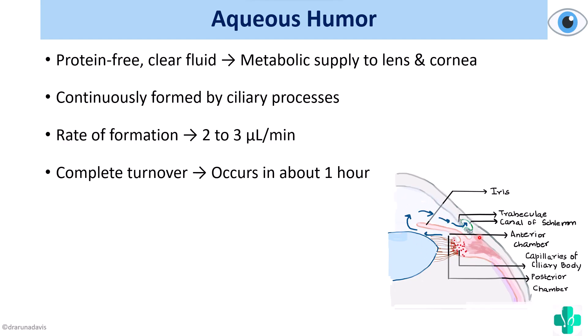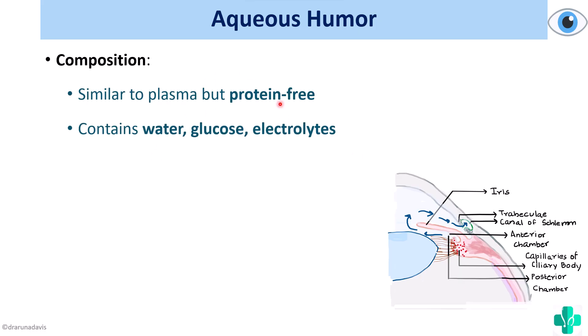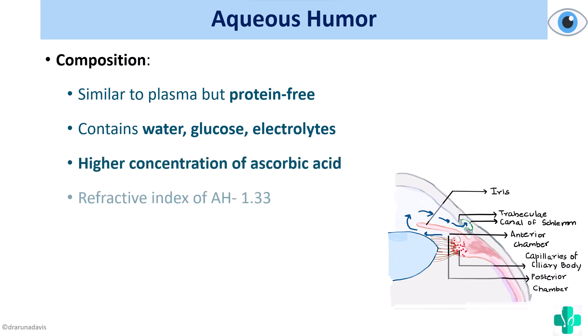There is always a circulation of aqueous humor within the eye. Aqueous humor is basically produced from plasma, so it is similar to plasma but is usually protein-free and contains water, glucose, electrolytes, and there is a high concentration of ascorbic acid. The refractive index of aqueous humor is around 1.33.